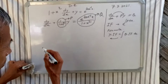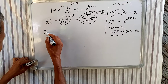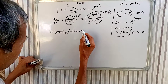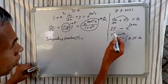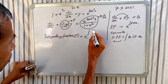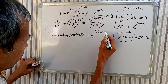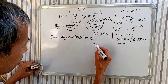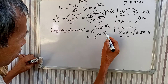Now computing the integrating factor. IF = e to the power of the integration of P dx = e to the power of integration of 1/(1 + x²) dx = e to the power tan inverse x.